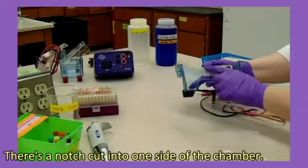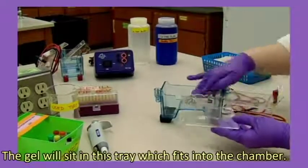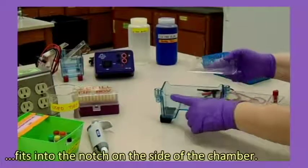There's a notch cut into one side of the chamber. The gel will sit in this tray which fits inside the chamber. The small tab on the side of the tray fits into the notch on the side of the chamber.